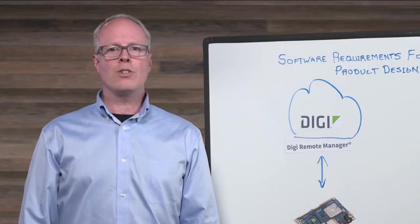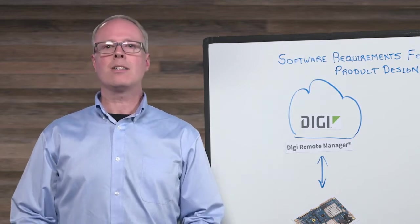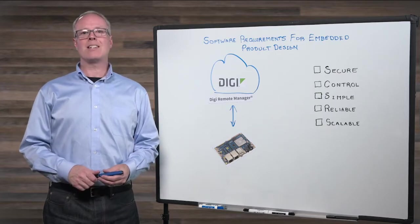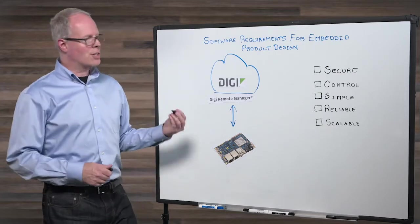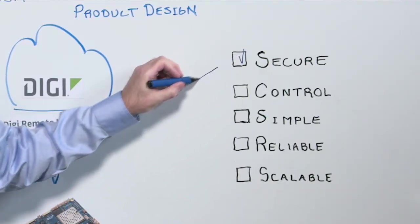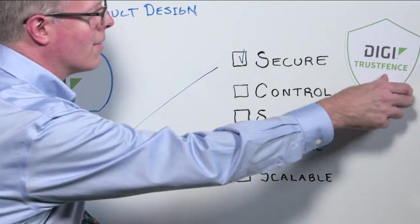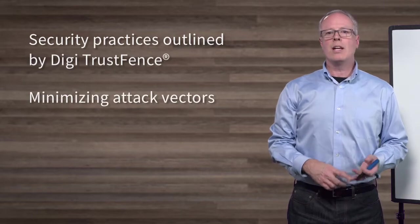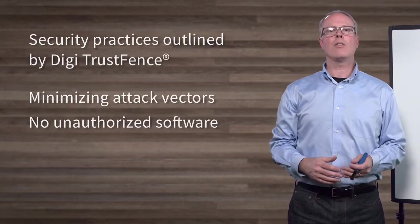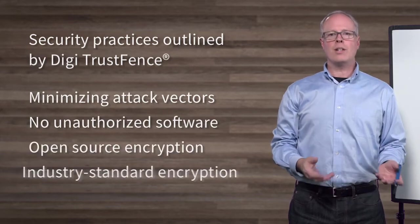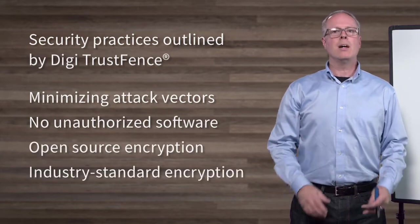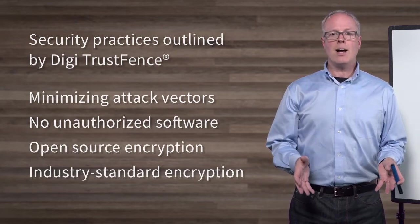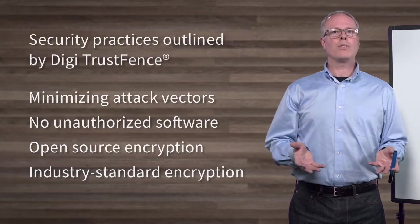Now, what should you be concerned about as you create your product, whether it be an embedded design for a kiosk, vending machine, thermostat, or something else? Number one, you want to make sure everything is as secure as possible. That means following some basic security practices, such as those outlined by our TrustFence security framework, which is provided with development kits. Those practices include minimizing attack vectors, ensuring only software that you intend can be loaded on your device, and using open-source or industry-standard encryption schemes, because that will provide the best protection against potential vulnerabilities. This way, you're leveraging an entire community who are continually making open-source components more secure.